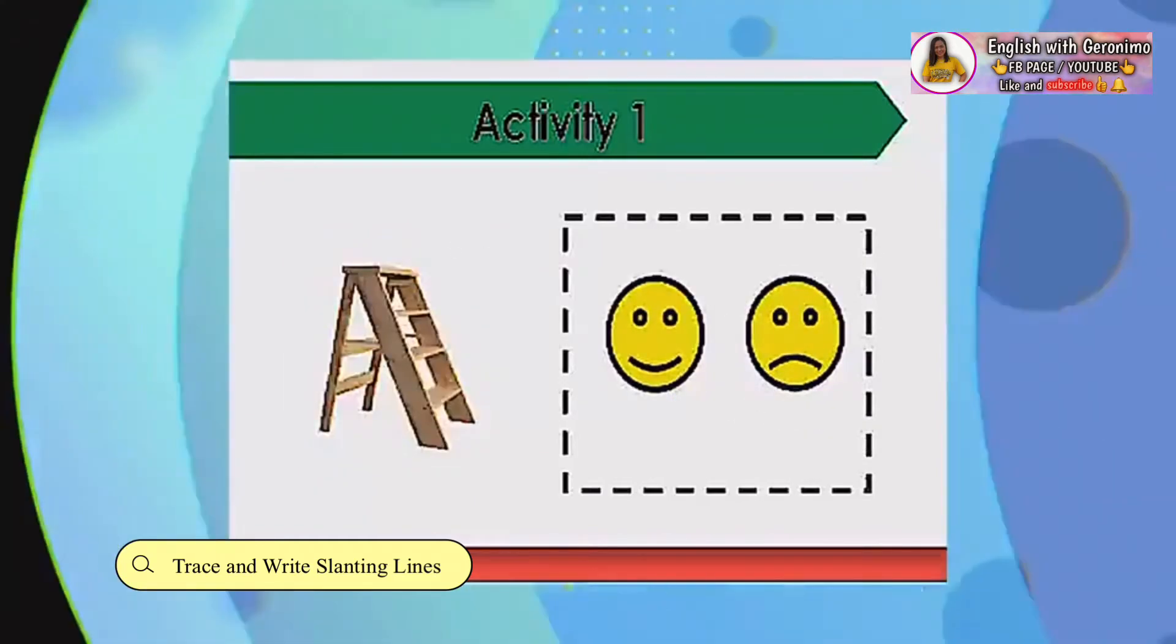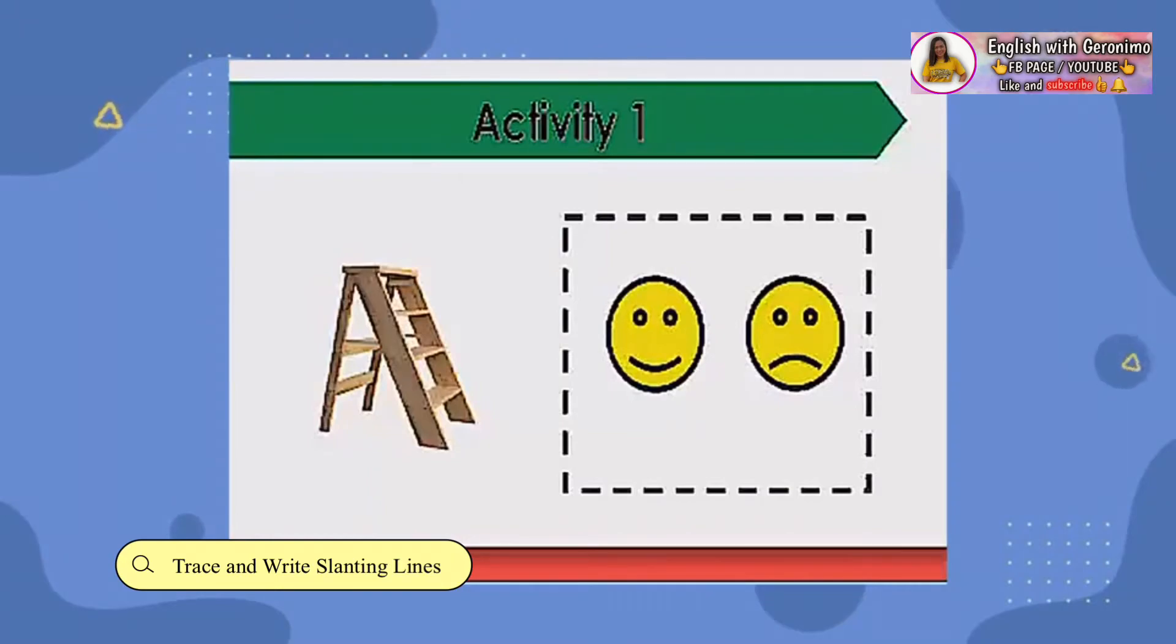Number 3. Is the object showing slanting line or not? Fantastic! The ladder shows a slanting line.